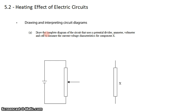In this question, we want to draw a complete diagram for the circuit that uses a potential divider, an ammeter, a voltmeter, and a cell to measure the current voltage characteristics for component X. Basically what we want to do is apply different voltages across component X, measure those voltages, and measure the currents that result from applying that voltage across.